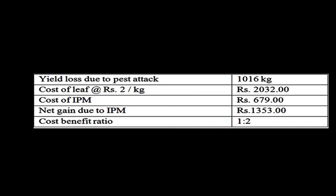Economics of integrated pest management: Yield loss due to pest attack is 1,600 kg per acre. Cost of leaf at rupees 2 per kg amounts to rupees 2,032. Cost of IPM practice is rupees 679. Net gain due to IPM practice is rupees 1,353. The cost-benefit ratio is 1:2.